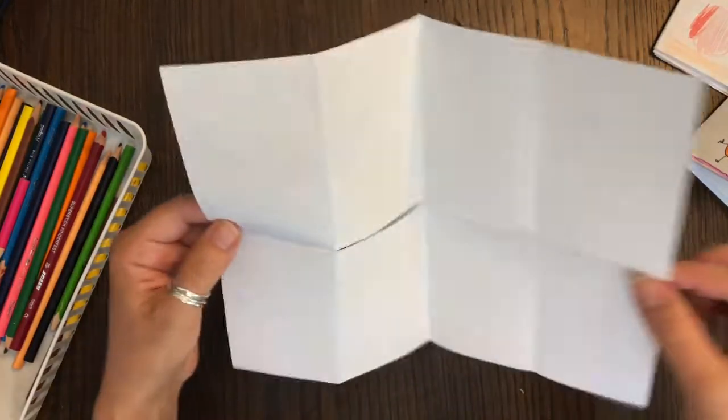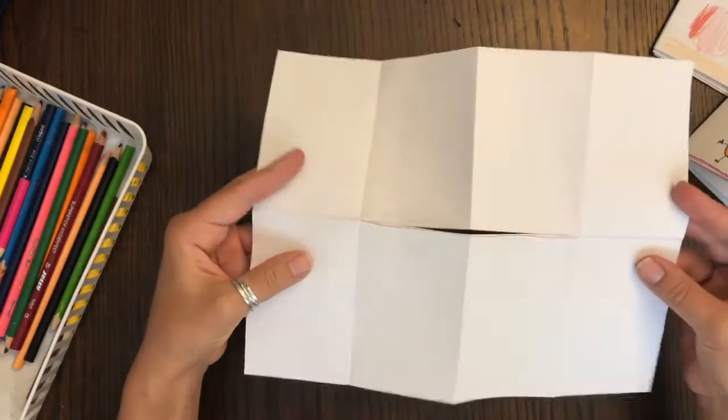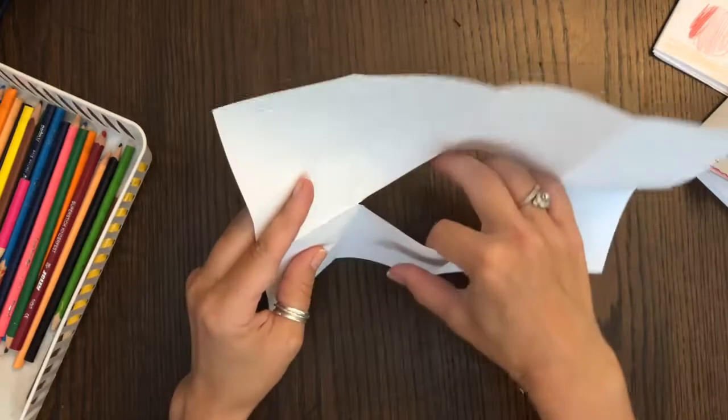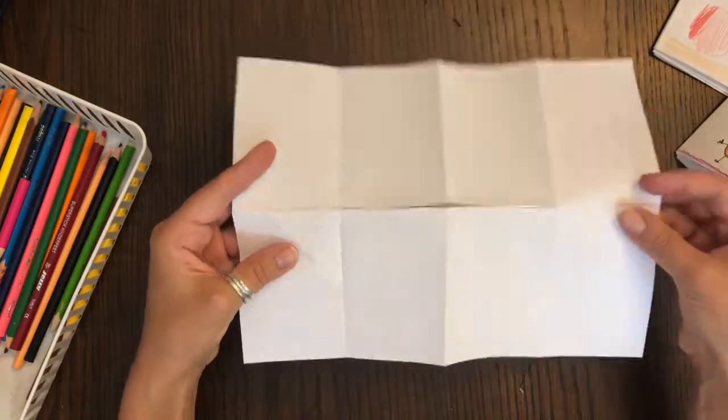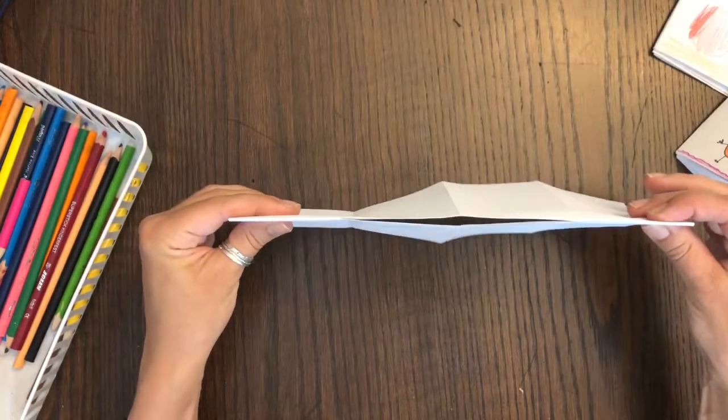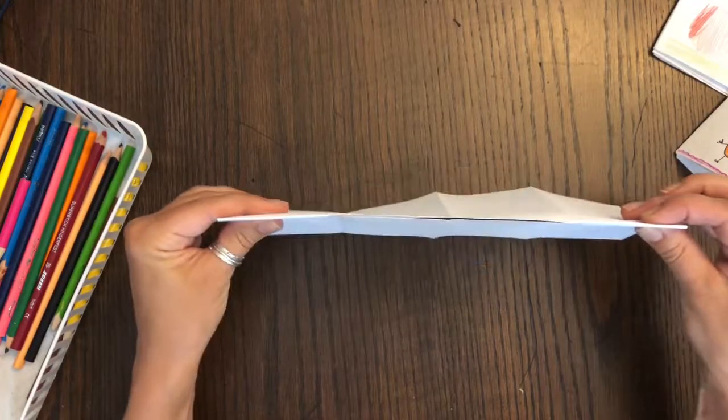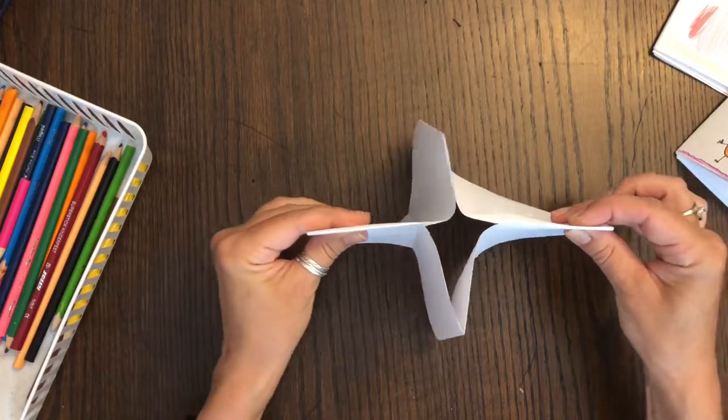So when I open the paper back up you're going to see that slit that we just cut in the center and that's going to be important for giving us the right shape for our book. So I'm going to fold it back in half like this and then slowly push my hands together to open up that shape in the middle.